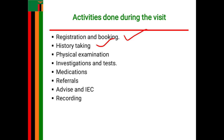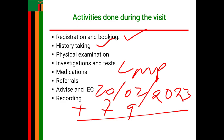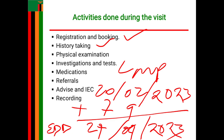As an example, if the woman's LMP was 20th February 2023, to calculate the expected date of delivery you add seven days to the date and nine months to the month. The expected date of delivery would therefore be 27th September 2023.